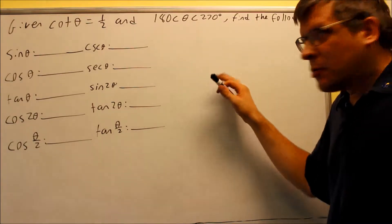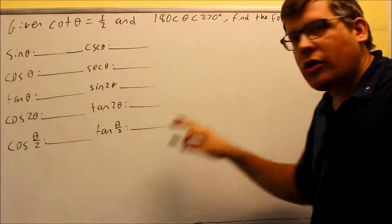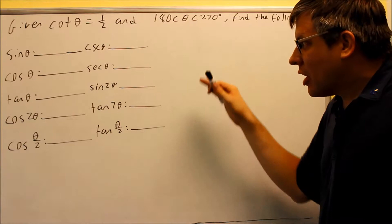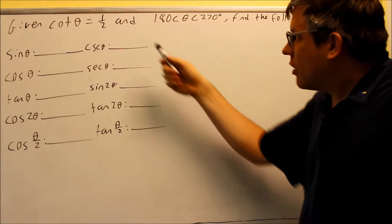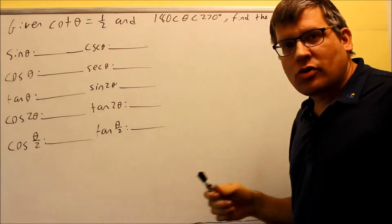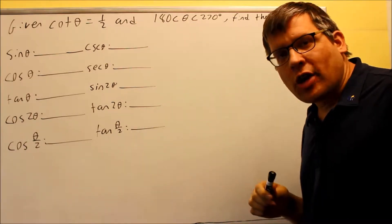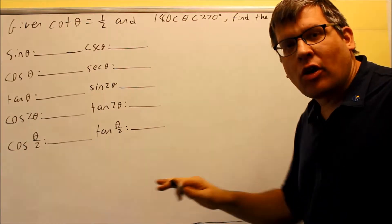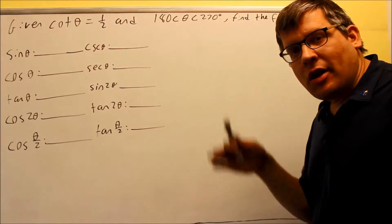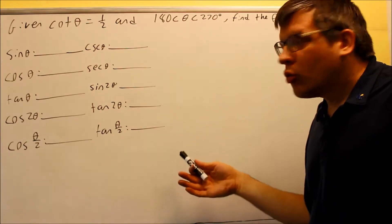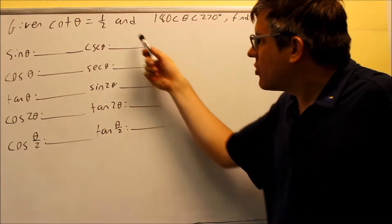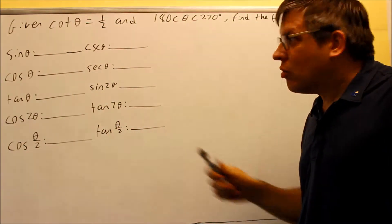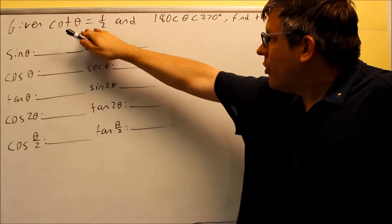We have another one of these problems where we have to fill in all the information, but this time it's going to be a little bit harder because we're going to be involving some square roots and fractions. The idea here is we want to find the exact value of all these. What you want to do first is set up your triangle based on the initial definition.